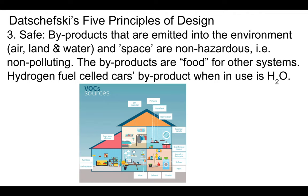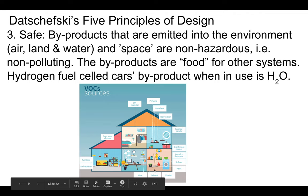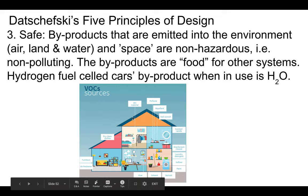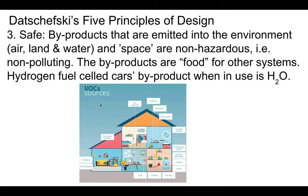Safe means products should be safe, so that byproducts emitted into the environment — air, land, water, and space — are non-hazardous and non-polluting. An example is hydrogen fuel cell cars, whose byproduct is basically water. Many products in our homes emit VOCs — Volatile Organic Compounds. For example, that new car smell is actually VOCs coming off the plastic inside the car, and it's not very good for you. So you want products to be safe, which also benefits the environment.